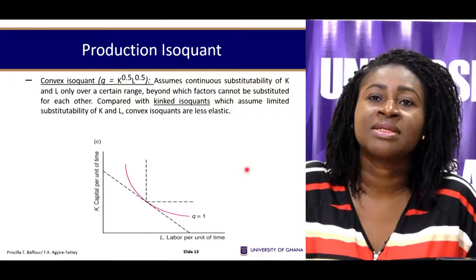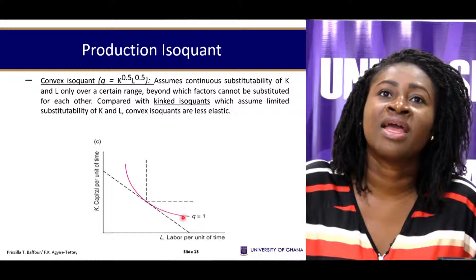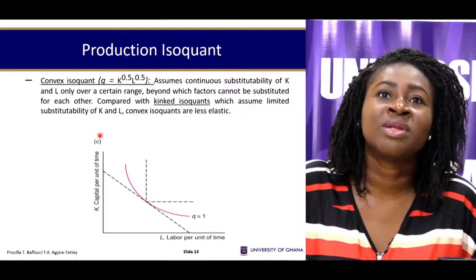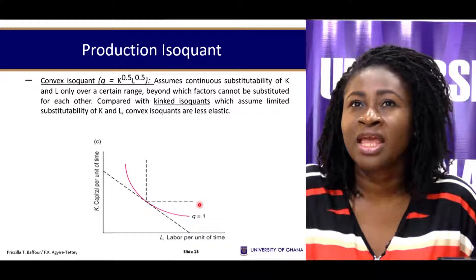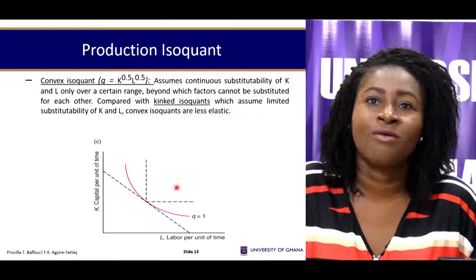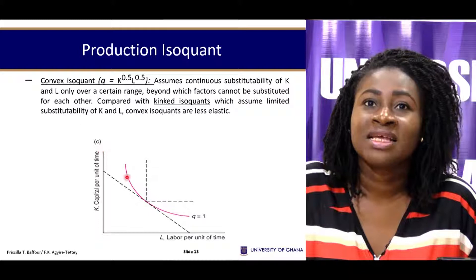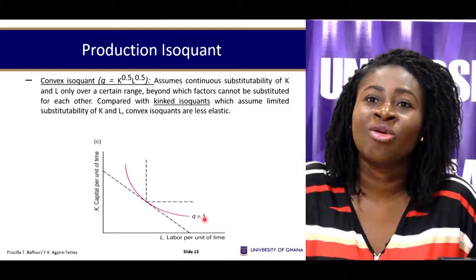A convex isoquant — which is analogous to an indifference curve in consumer theory — contrasts with a kinked isoquant, which assumes limited substitutability. With a kinked isoquant, the firm cannot easily substitute one factor for another, similar to complementary goods. With a convex isoquant, however, the firm can substitute capital for labor along a given isoquant.